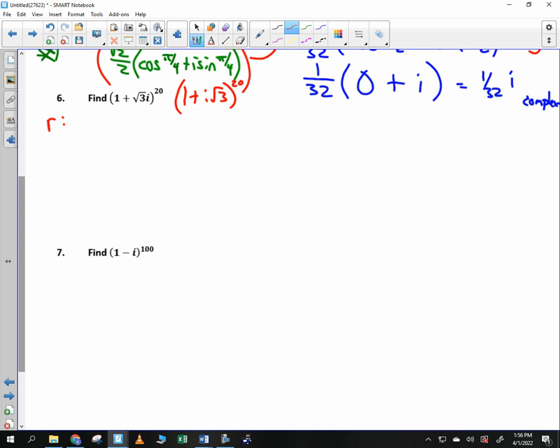So now we have one plus i root of three raised to the twentieth power. Let's make sure we get through these last two examples. So I notice how the i is sitting back here. It really should be sitting in front. I just rewrote it to help you see that. I need to first put it into trigonometric form. So help me move along. What do I do? Square root of one plus three. We do not include the i. So I get square root of four, which is two. Good. That was pretty straightforward.